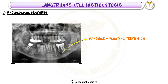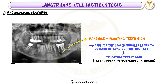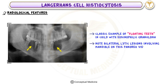3. Mandible — Floating Teeth Sign: When LCH affects the jaw, particularly the mandible, it leads to erosion of the bone supporting the teeth. This creates the floating teeth sign, where the teeth appear as if they are suspended in mid-air on radiographs. This finding is highly suggestive of Langerhans cell histiocytosis. A classic example of floating teeth is seen in a child with eosinophilic granuloma, with bilateral lytic lesions involving the mandible on a panorex view.